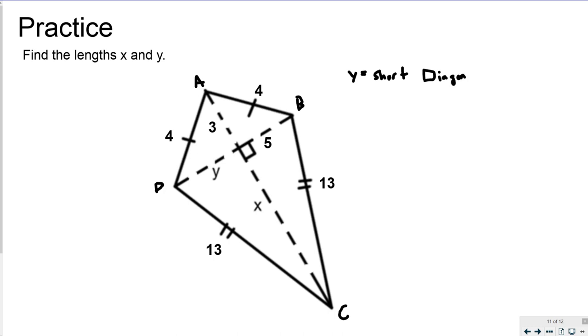So since this is a short diagonal half, that means that Y must be congruent to 5. Since in the short diagonals, two halves are congruent automatically. So if Y is congruent to 5, it means that Y equals 5.